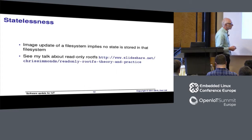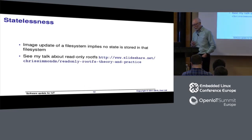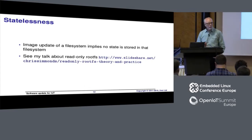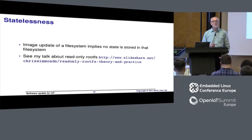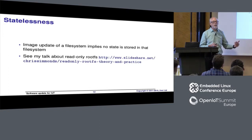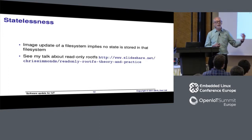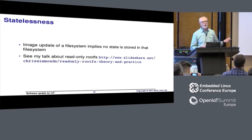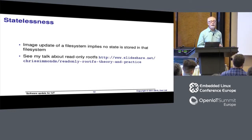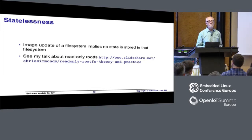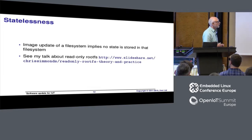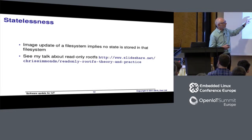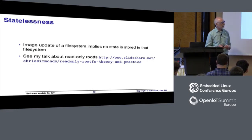One aspect of doing a whole image update of the root file system is that the root file system has to be stateless. Because every time you do an image update, you are restoring the state of the file system to that when it was built. So if you have network config, SSH keys, and other things in your root file system, they're going to get overwritten unless you move that persistent state out to a different place.